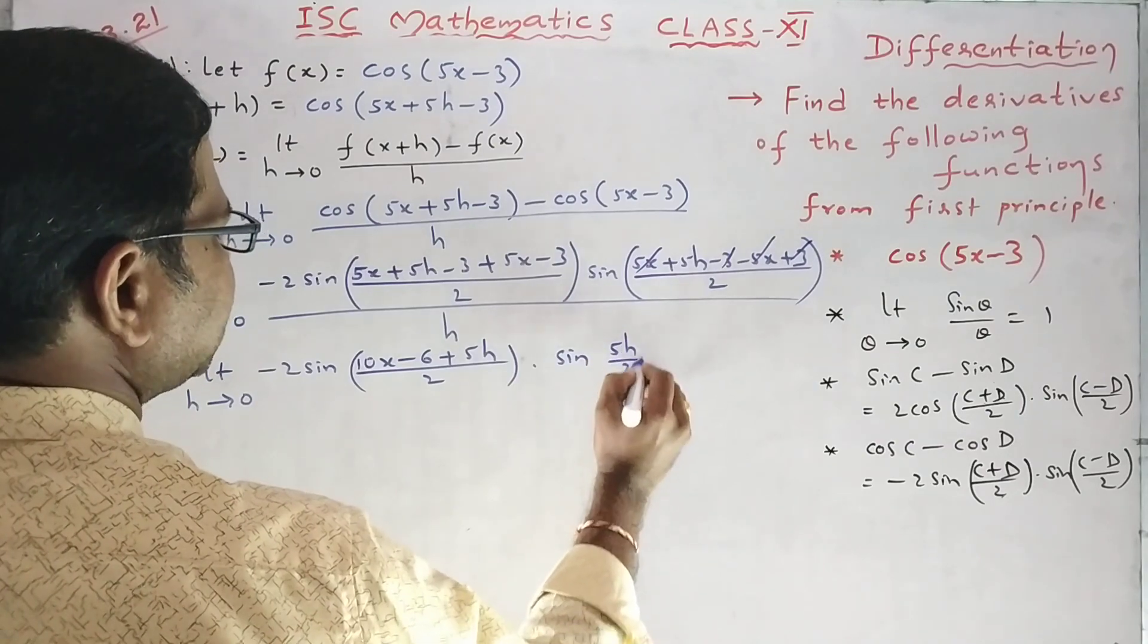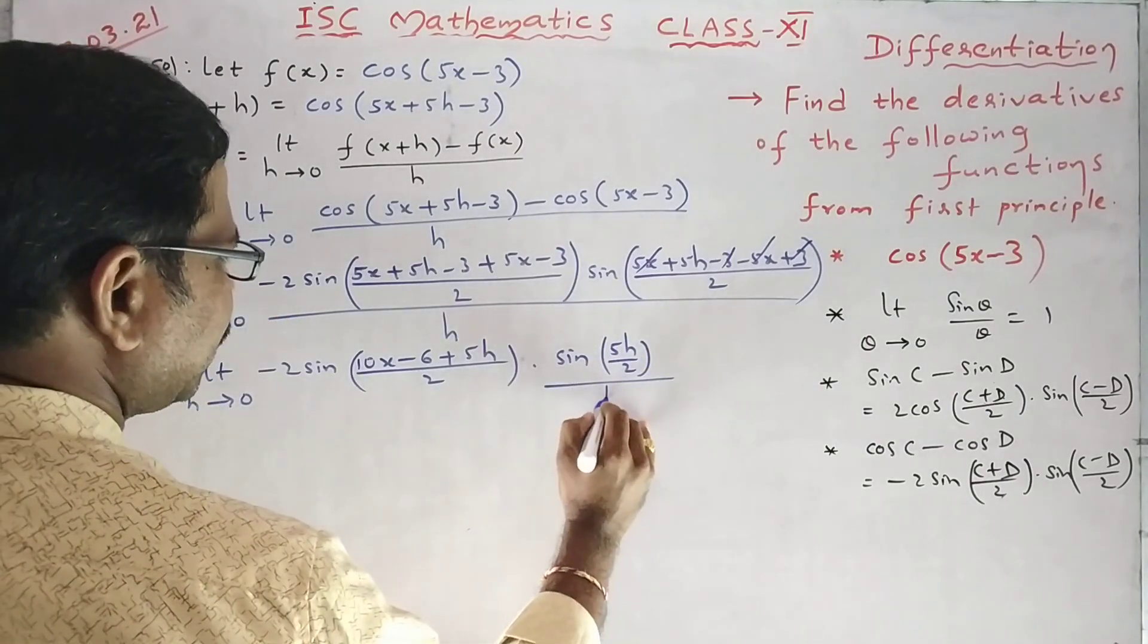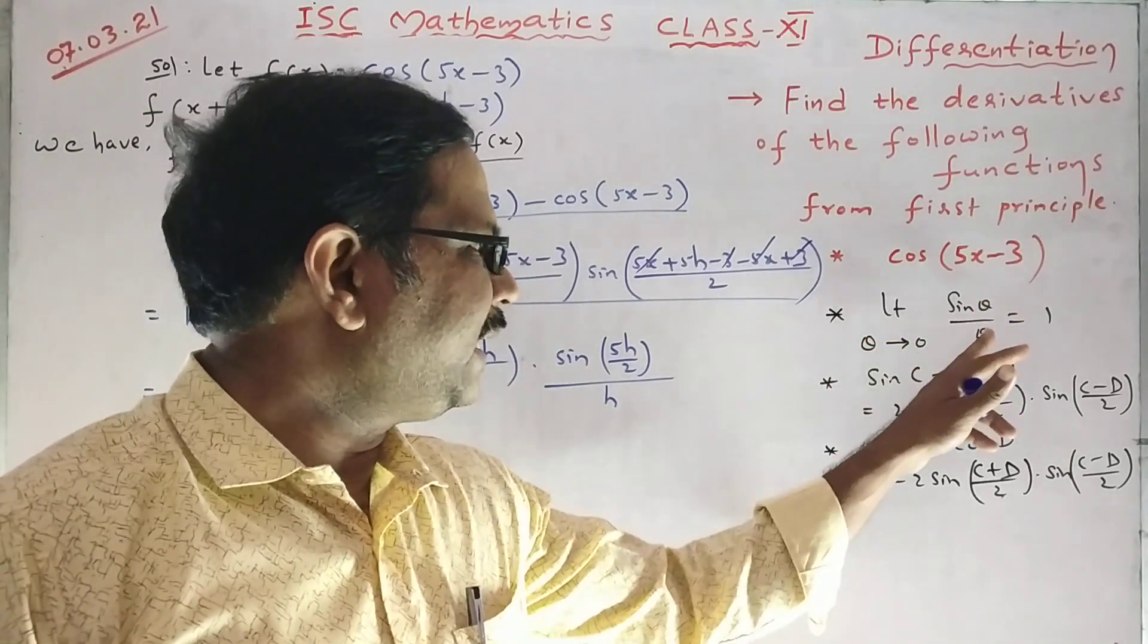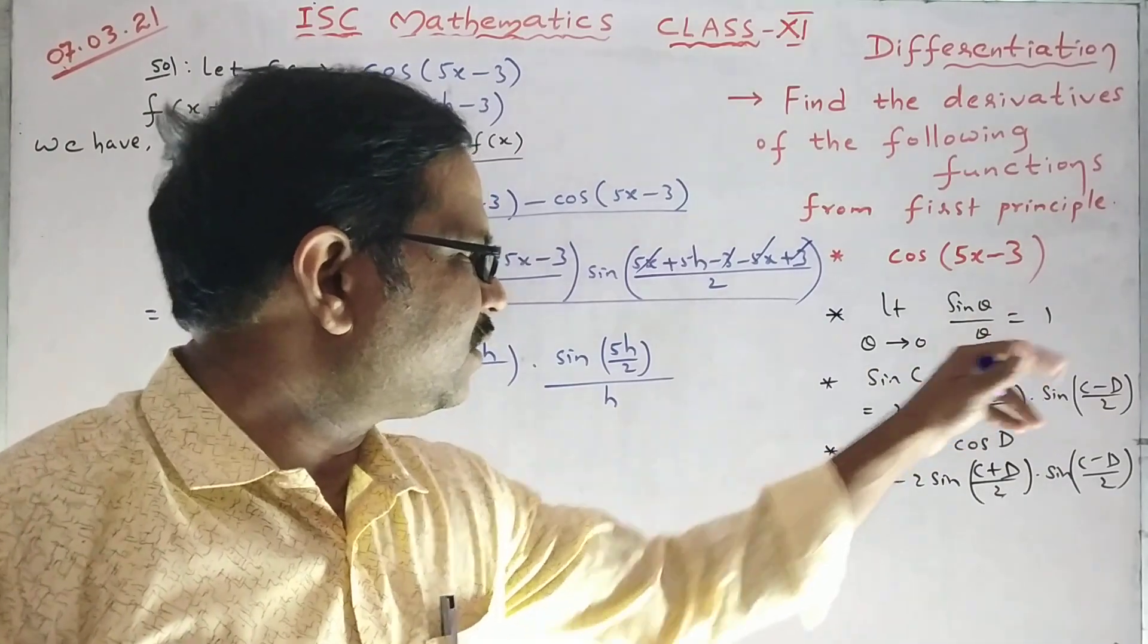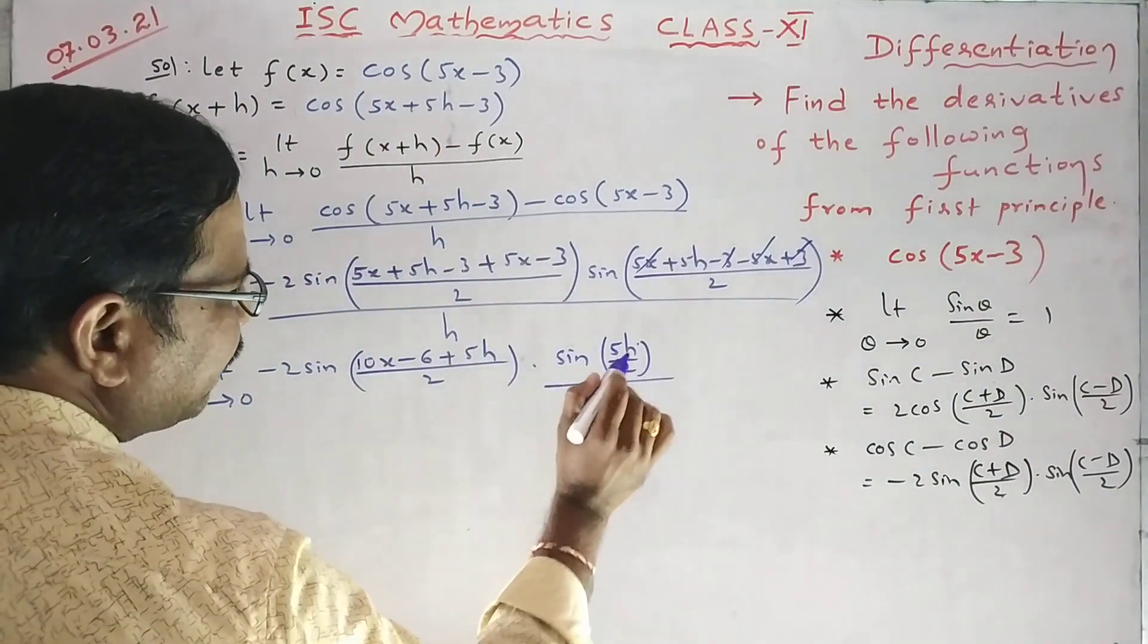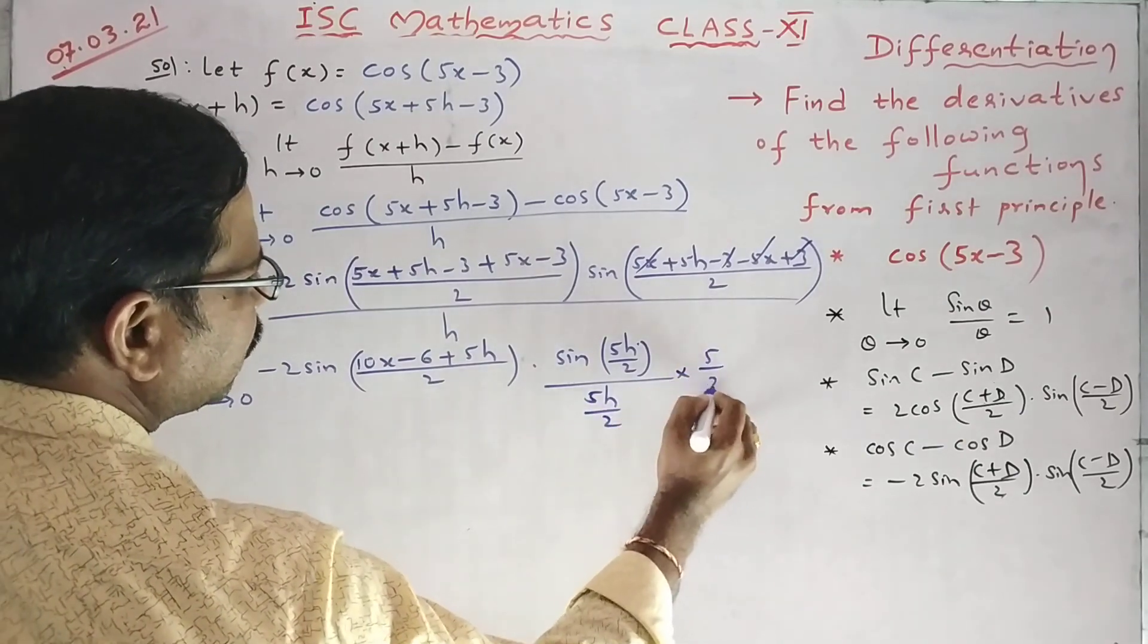So what is remaining? 5h by 2. H I am putting here. This yh I am putting here. As I told you, limit sin 5x, 3.